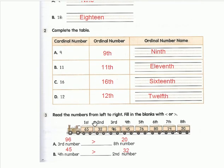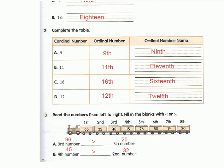Third question: read the numbers from left to right and fill in the blanks with less than or greater than. Question a: third number versus eighth number. The third number is 96 and the eighth number is 20. When we compare 96 to 20, 96 is greater than 20. Question b: fourth number versus second number. The fourth number is 45 and the second number is 32. When we compare 45 to 32, 45 is greater than 32, so we put the greater than symbol here. Thank you.